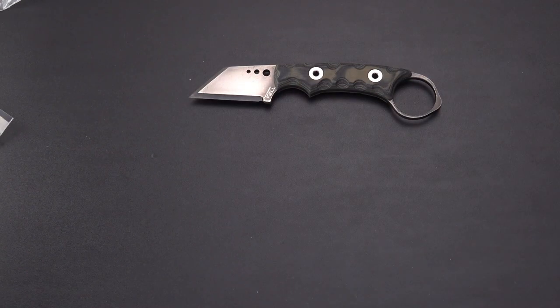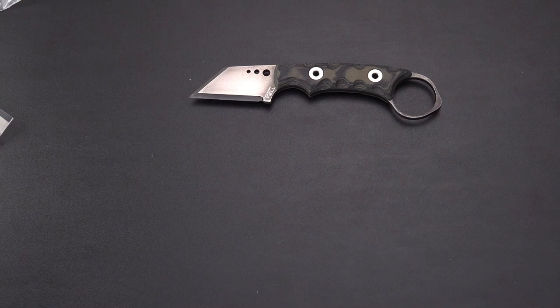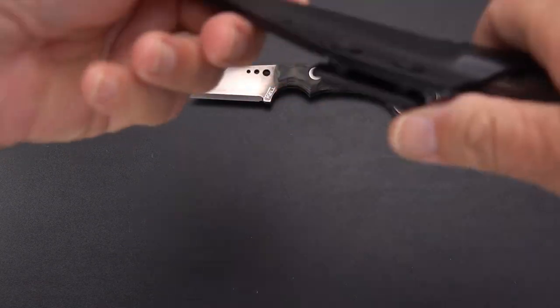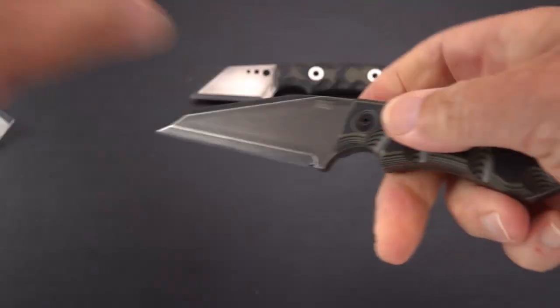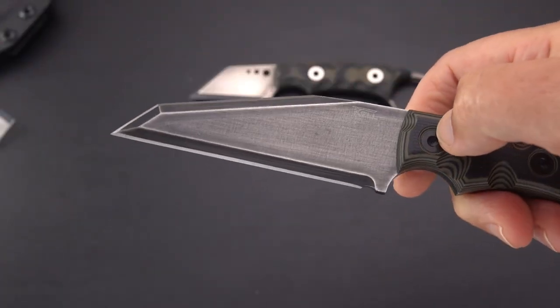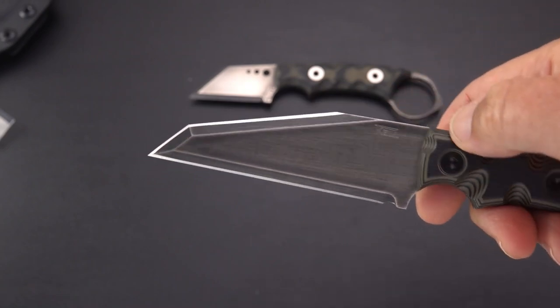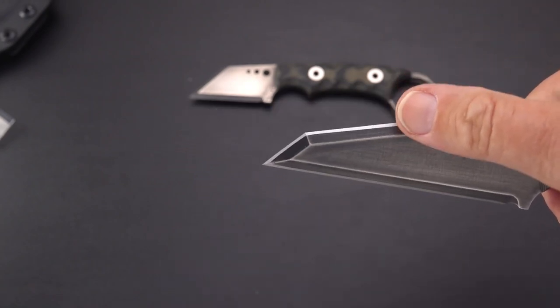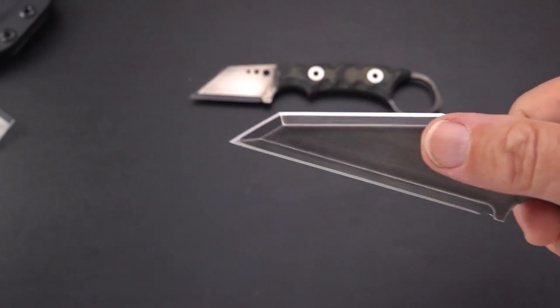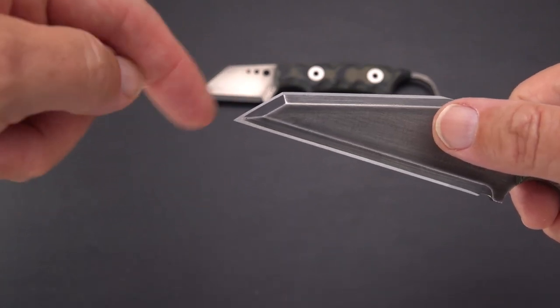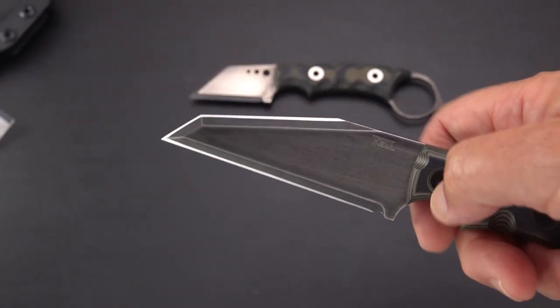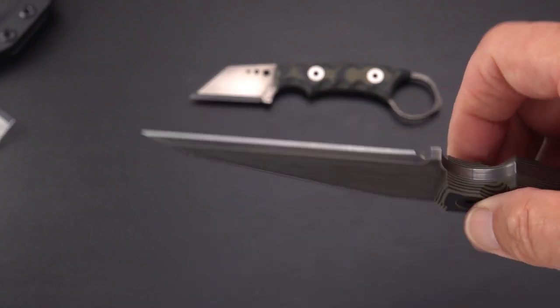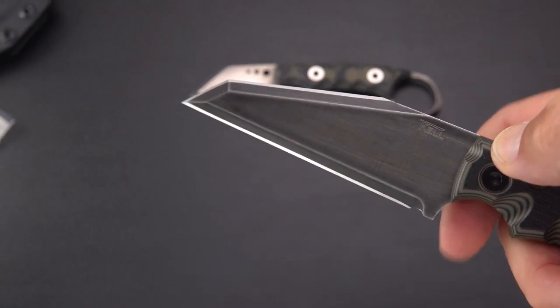But let's take a look at a couple others for comparison. First of all, this is the Guardian which I previously reviewed. And this is also a wharncliffe style with a long sharpened top edge—it actually has three edges on this one, so take your pick as to which one you want to use. This also has a pretty thick stock and a pretty steep grind, but for size there is the Guardian next to the Nightshade.